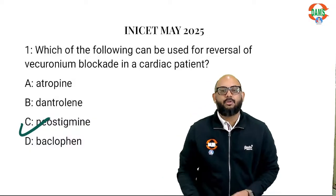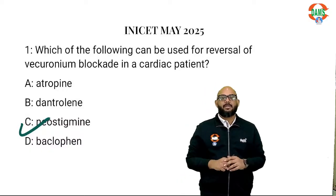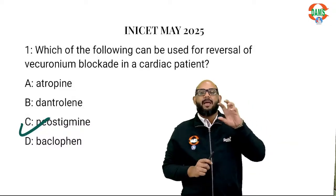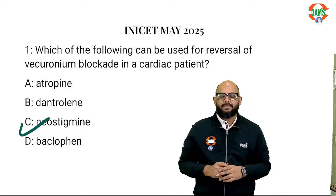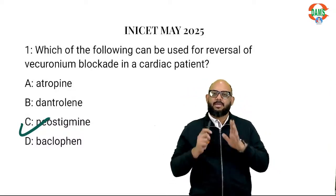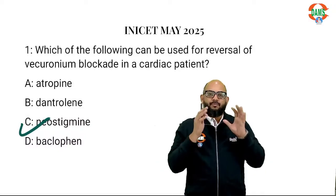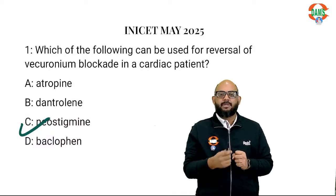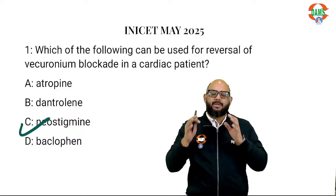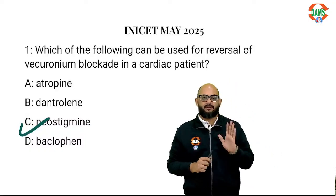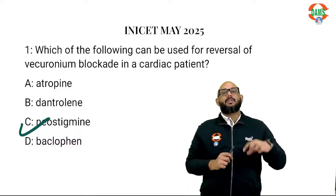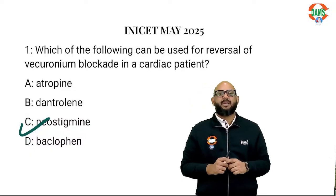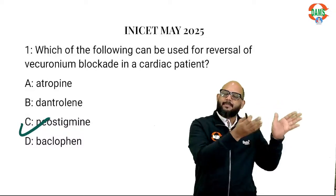NDMRs are non-depolarizing muscle relaxants, which are competitive antagonists at nicotinic acetylcholine receptors in the post-junctional muscle membrane. They are competitive antagonists, so for the muscle relaxant to act, they need to fight with the molecules of acetylcholine, replace them, come and sit on the receptor — and do nothing.